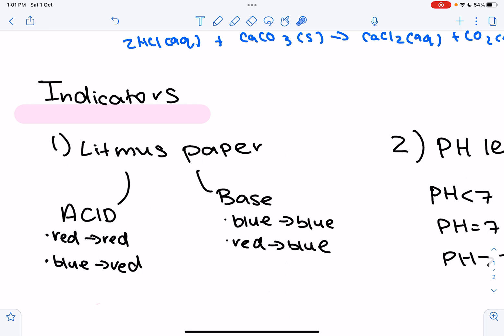So when testing for an acid, if you dip a red litmus paper in acid, it will stay red. However, if you dip a blue litmus paper in an acid, it will change to red. On the other hand, if you dip a blue litmus paper in a base, it will stay blue. But if you dip a red litmus paper in a base, it will change to blue.